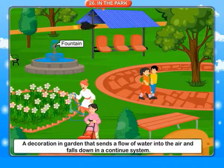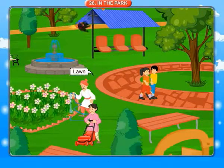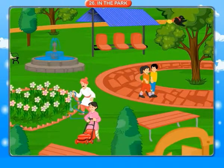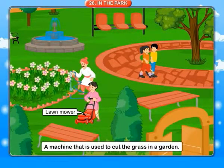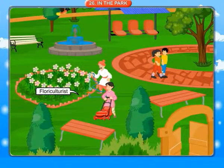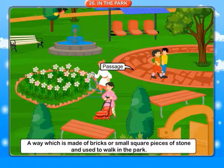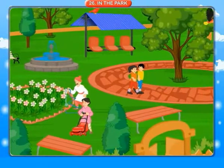Fountain: a decoration in the garden that sends a flow of water into the air and falls down in a continuous system. Lawn: a light grassy field. Lawn mower: a machine used to cut the grass in a garden. Hose pipe: a pipe made of plastic or rubber used for watering the plants. Floriculturist: a person who has deep knowledge of flowers and plants and grows flowers.